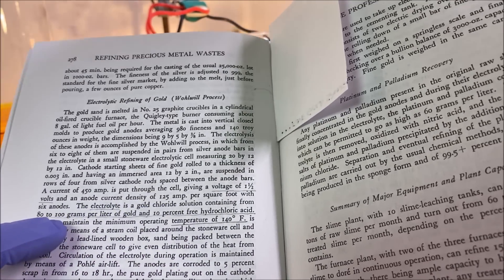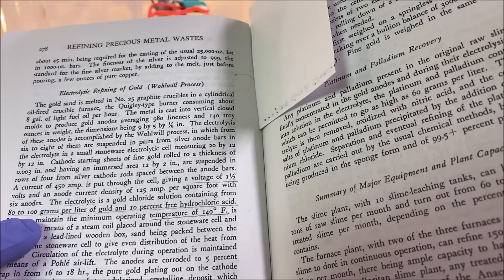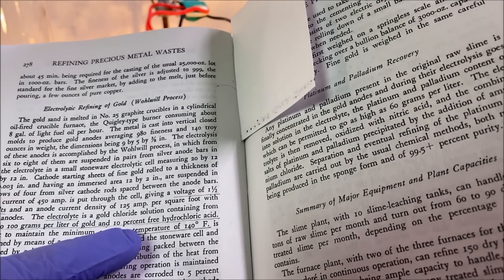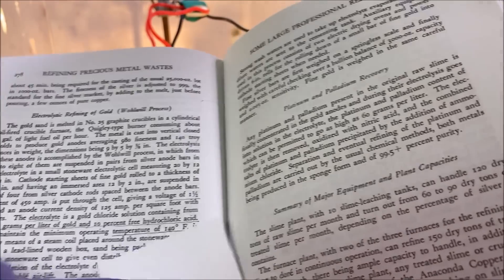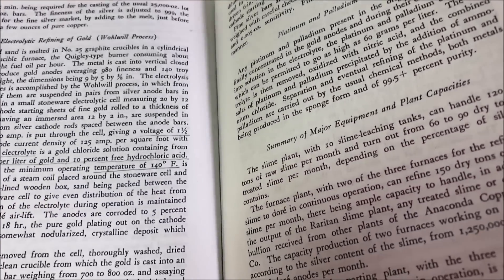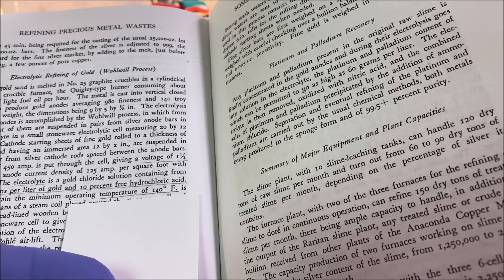The electrolyte is a gold chloride solution with 80 to 100 grams of pure gold and 10% free hydrochloric acid. We want the operating temperature up to 140 degrees Fahrenheit, which is 60 degrees Celsius.